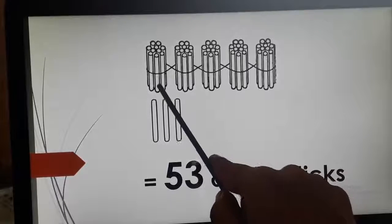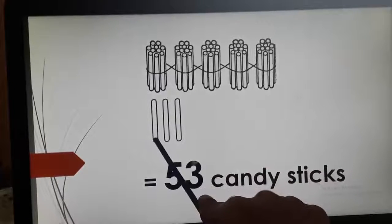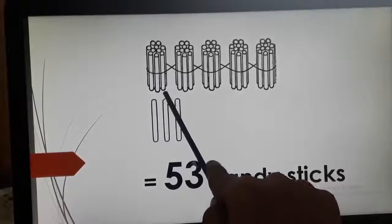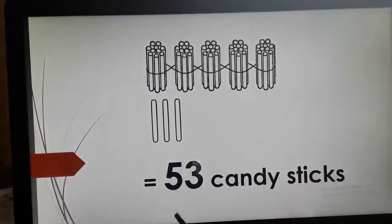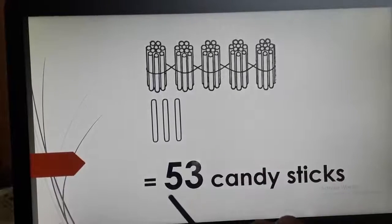Now, here 1, 2, 3, 4 and 5 bundle of candy sticks and 1, 2 and 3 more. So, 50 and 3, 53. 50 and 3, 53.